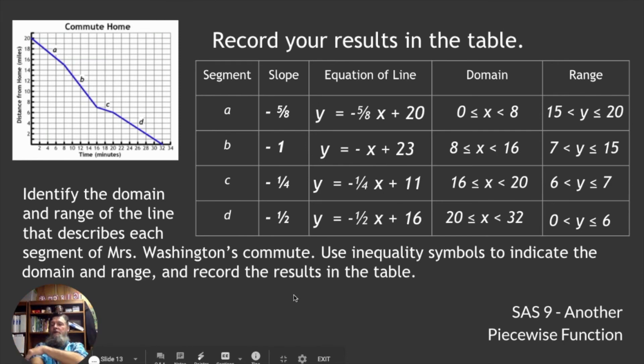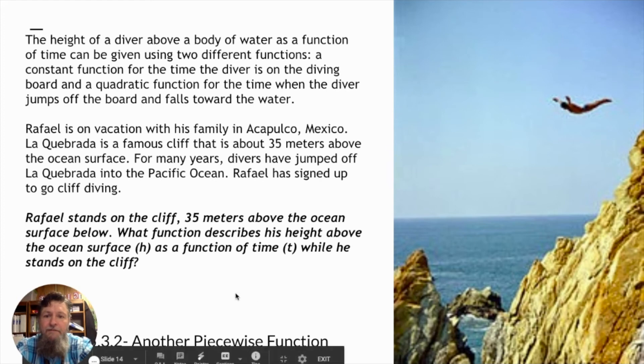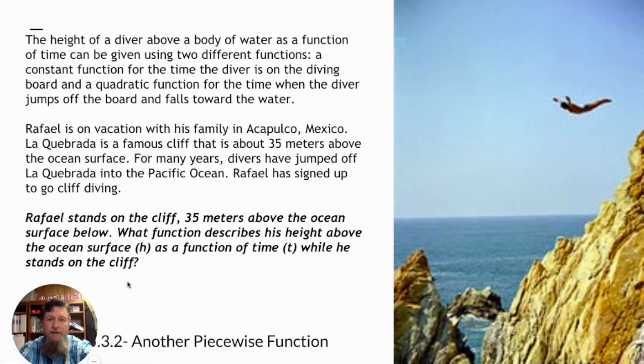This is called a piecewise function. A piecewise function means that there are different pieces of the function that have different formulas for each piece. The height of a diver above the water is a function of time can be given using two different functions. A constant function for the time the diver is on the diving board or the platform, and a quadratic function for the time when the diver jumps off the board and falls toward the water.